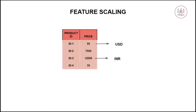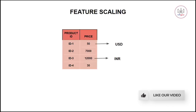Consider another example with product ID and price, where some values are in USD and others in INR. If this is not specified, say 50 in USD and another value in INR, you will face comparison issues. The value in USD will appear low because its unit isn't accounted for. So we do feature scaling for price as well, so that all values are in some fixed range irrespective of their unit of measurement.